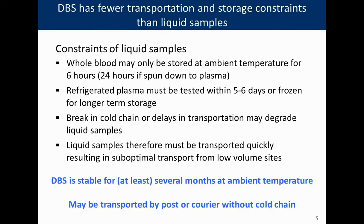Liquid samples requiring new collections from hard-to-reach individuals present significant challenges. Liquid samples must be transported quickly, which can result in suboptimal transportation from low-volume sites. For example, a facility receiving only a couple of samples per week must still arrange frequent plasma pickup, increasing per-sample transportation cost. In contrast, DBS is stable for at least several months at ambient temperature — some studies show stability for up to a year — and DBS may be transported by simple post or courier without any need for a cold chain.